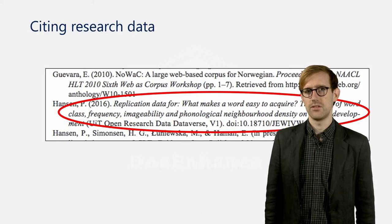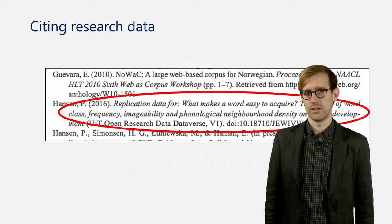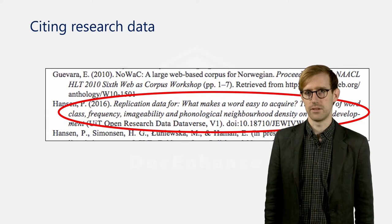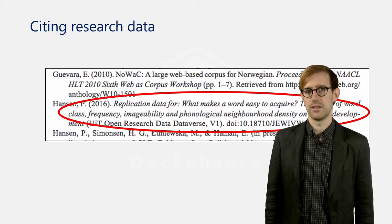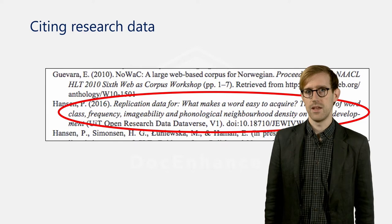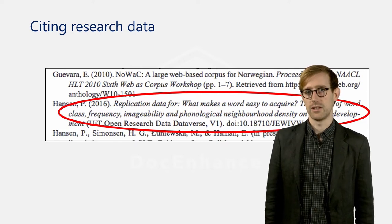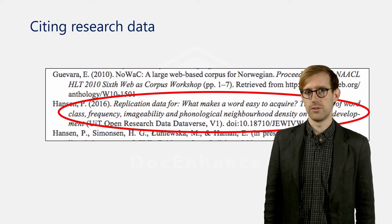The basic citation principles when using research data or published resources are the same, and at a glance it may appear that there is little difference between the citation of a published article and a data set. The mandatory parts of the citation are the same when citing a paper or data set, but there are also a few differences.